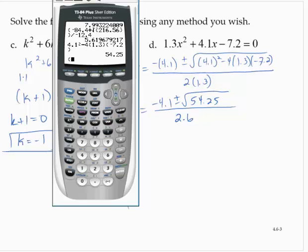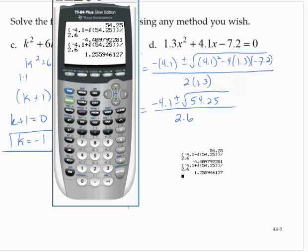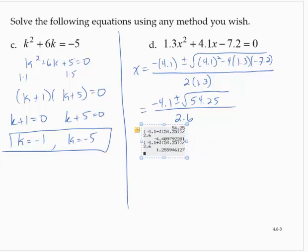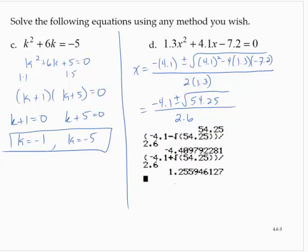Back to the calculator. Numerator: -4.1 - √54.25. Close it off. Close off the numerator. Divide by 2.6. Second enter and change that subtraction in the numerator to an addition. Hit enter a second time. And then approximate appropriately. So then x ≈ -4.410, x ≈ 1.256.